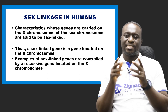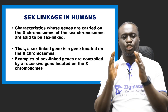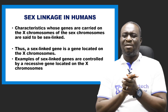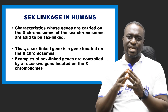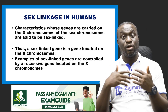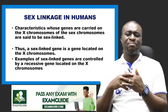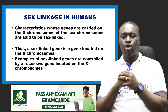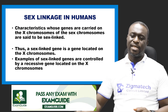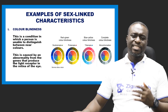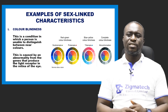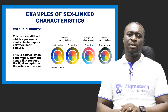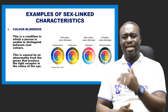A sex-linked gene is actually a gene that is located in the X chromosome. We have several types of sex linkage or sex-linked genes which we're going to look at. Examples of sex-linked genes are controlled by a recessive gene located on the X chromosome. Let's take a look at some examples of sex-linked characters or traits that are found mostly in the X chromosome.